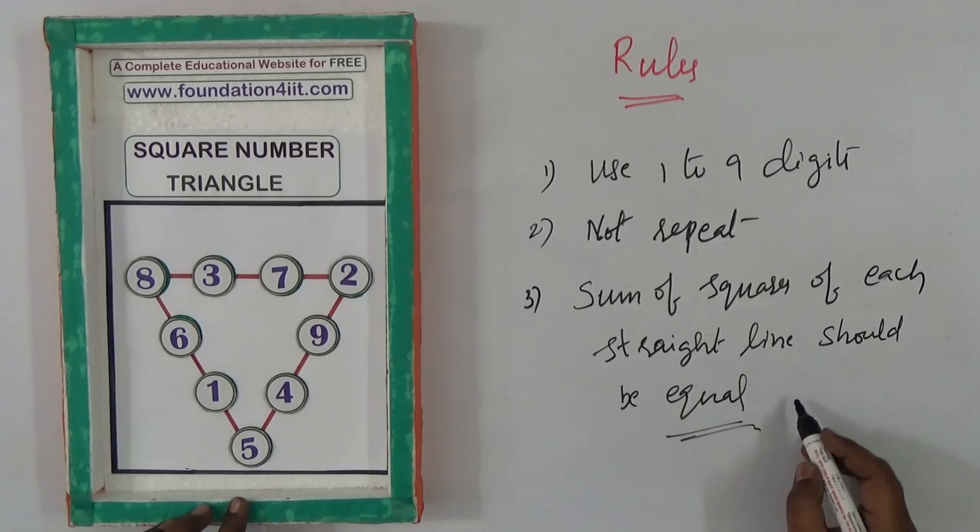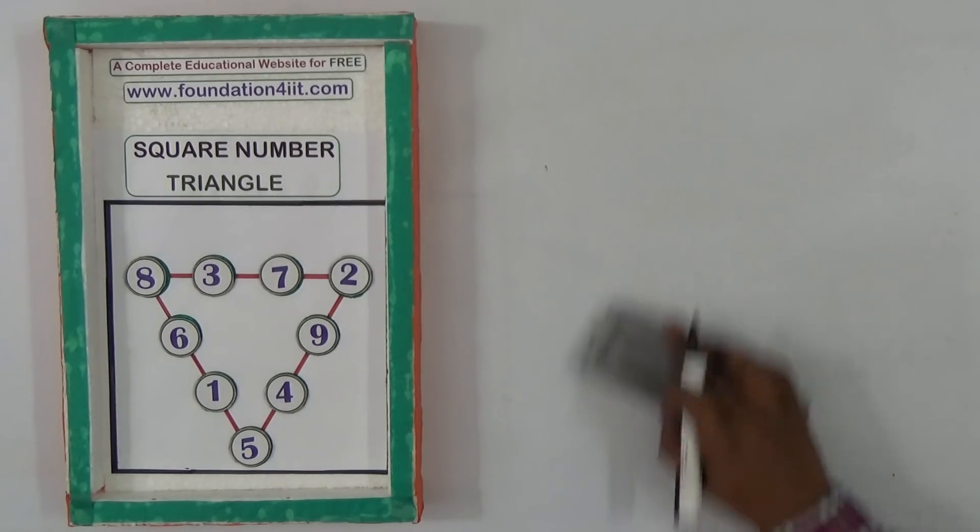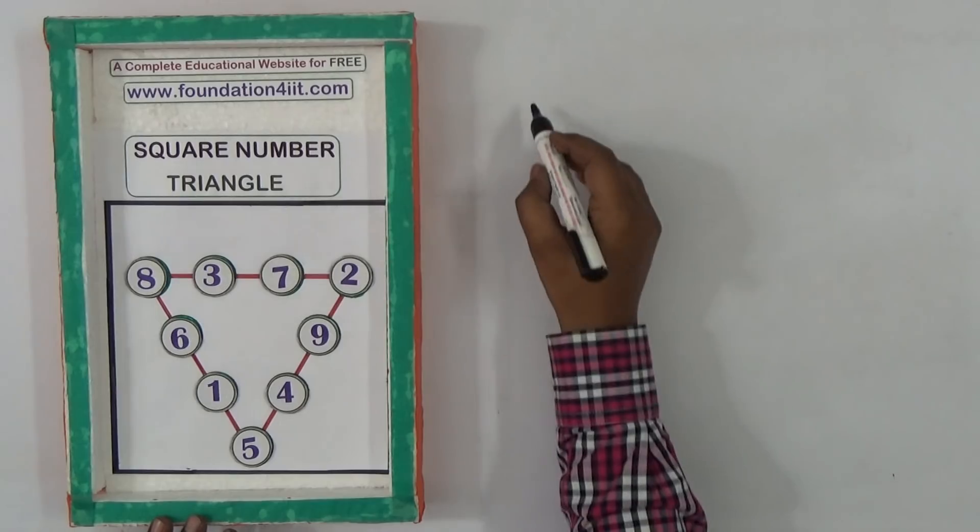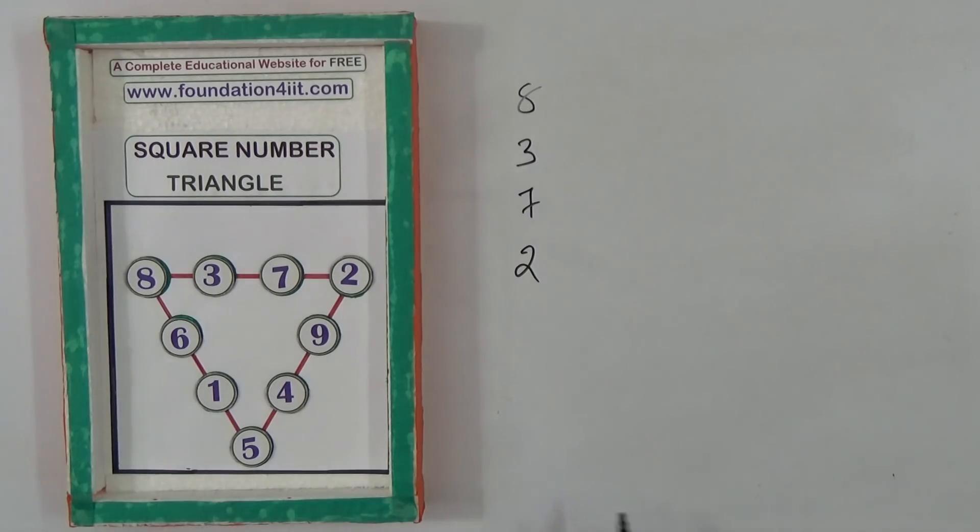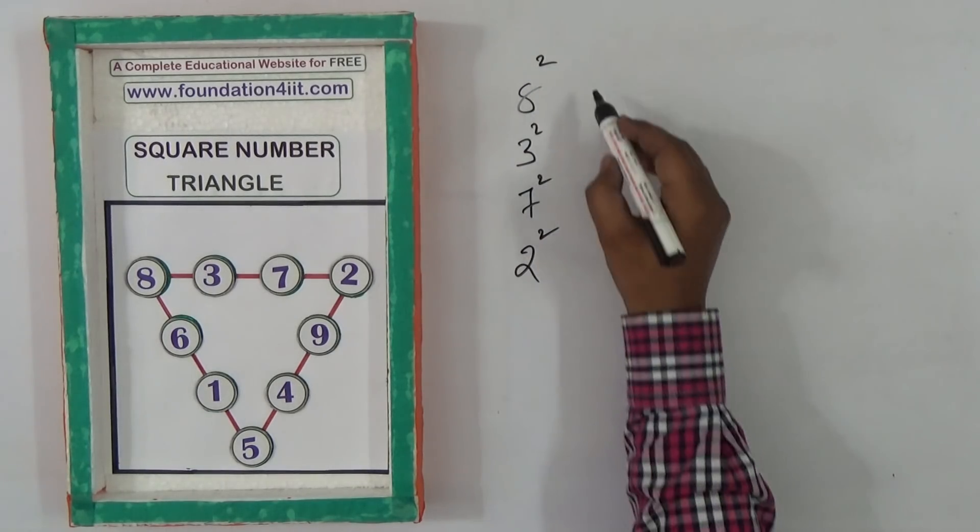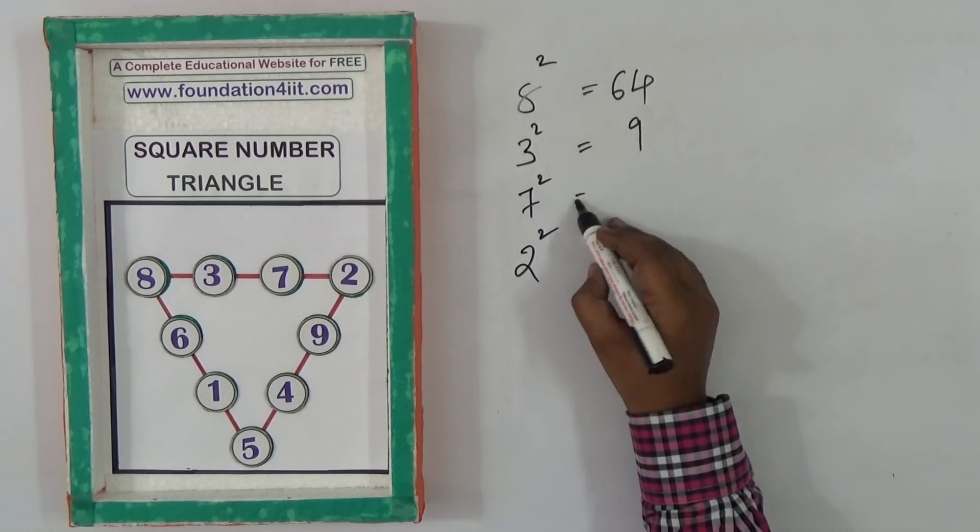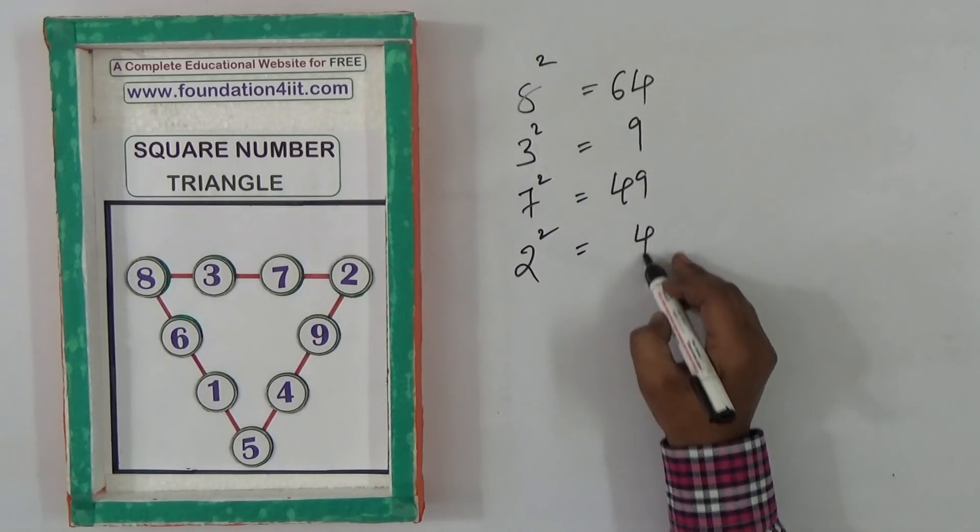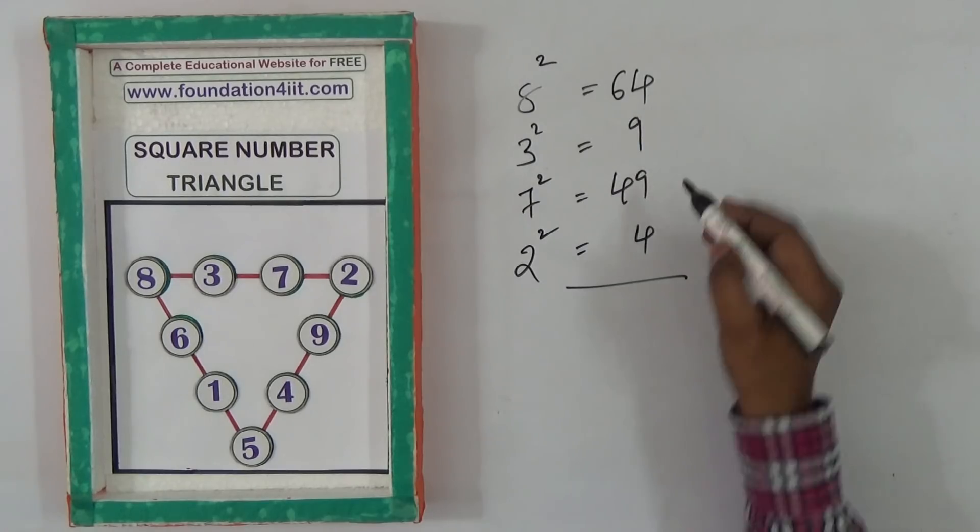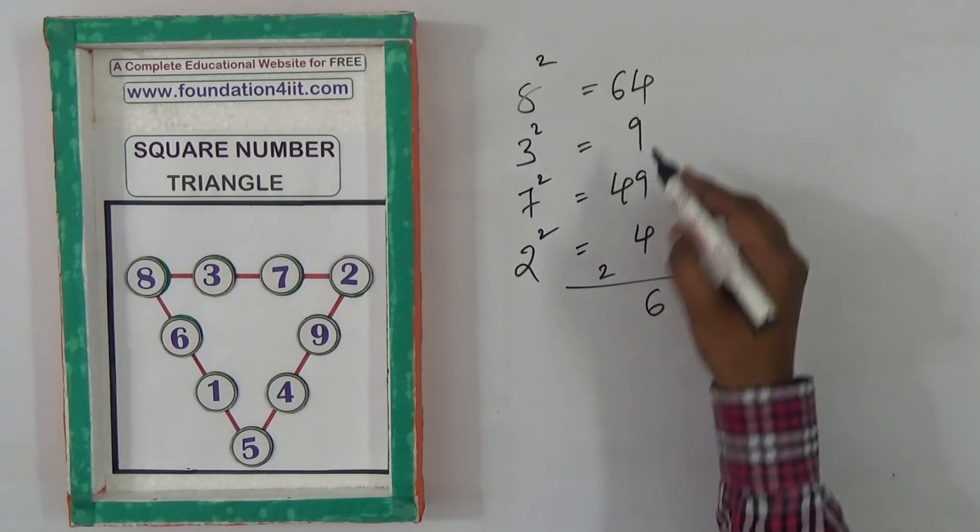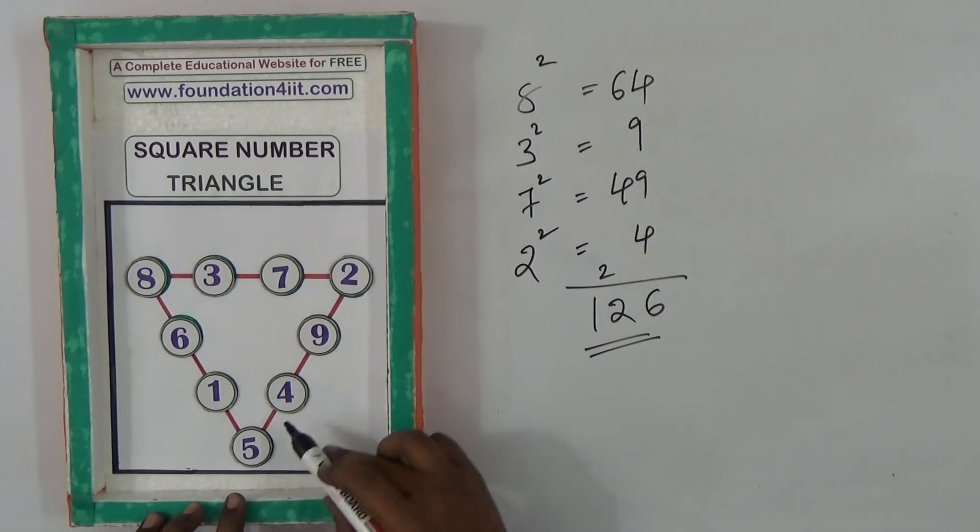For example, if you take this straight line: eight, three, seven, two. This one line, apply the squares. Eight square is 64, three square is 9, seven square 49, two square is 4. Add this number: 13, 26, so 126. Let's try another straight line: 5, 4, 9, 2.